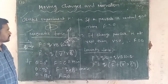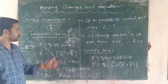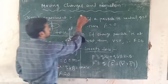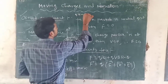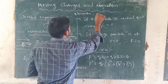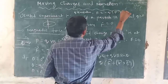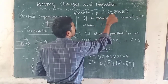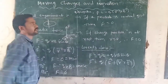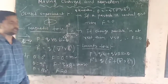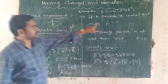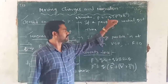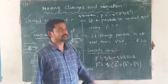When the particle is neutral — charge is zero, Q = 0 — force will be zero. If charge is negative, we write F = −Q(V⃗ × B⃗), or equivalently F⃗ = Q(B⃗ × V⃗). When the particle is at rest, velocity V = 0, therefore force will be zero.